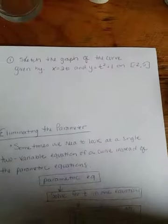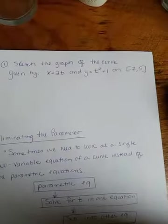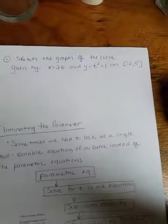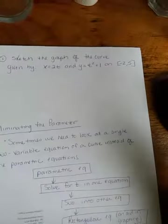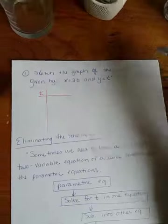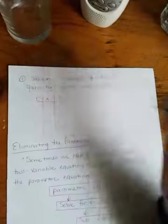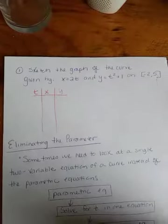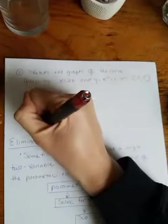Alright, so number one, sketch the graph of the curve given by x equals 2t and y equals t squared plus 1 on the interval negative 2 to 5 inclusive. So we're going to make a table of values and just plot the points. Alright, so I'll go like this. So I've got t, so again, this negative 2 to 5, that is representing t values, just so we're clear on that. And then I'm going to have an x column and a y column because I have those two parametric equations. So t, it's starting at negative 2, and I'm just going to make it easy and make them integers. Negative 1, 0, 1, 2, 3, 4, 5. Wow, classic Swanson style. I left myself a ton of room.